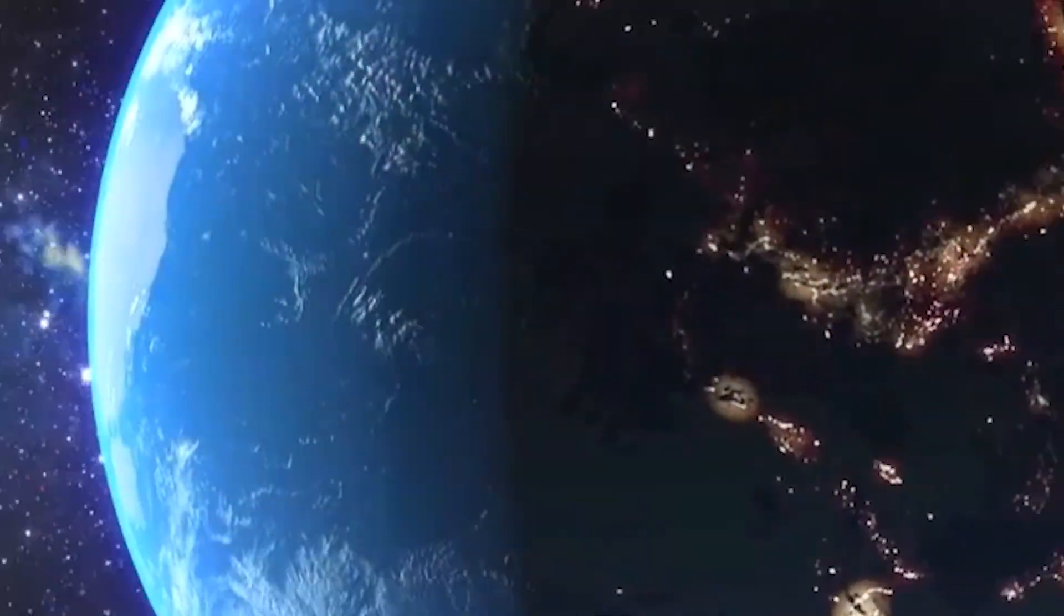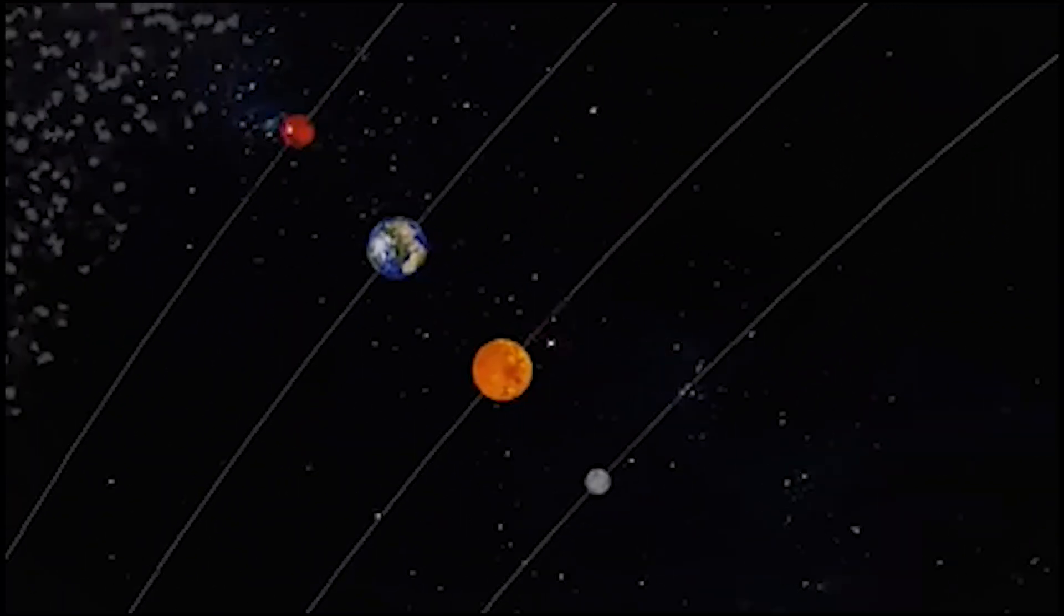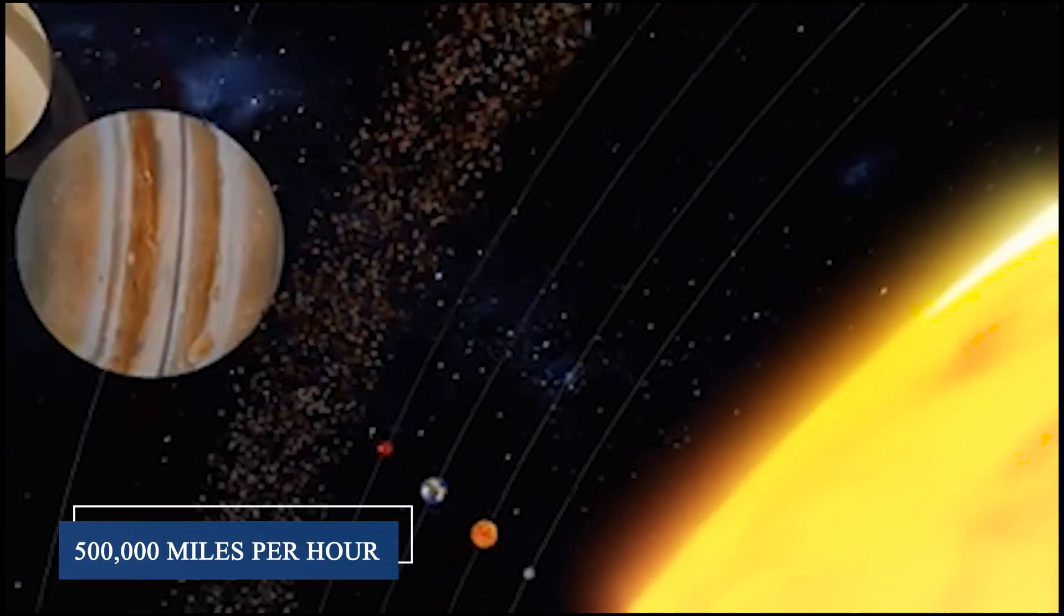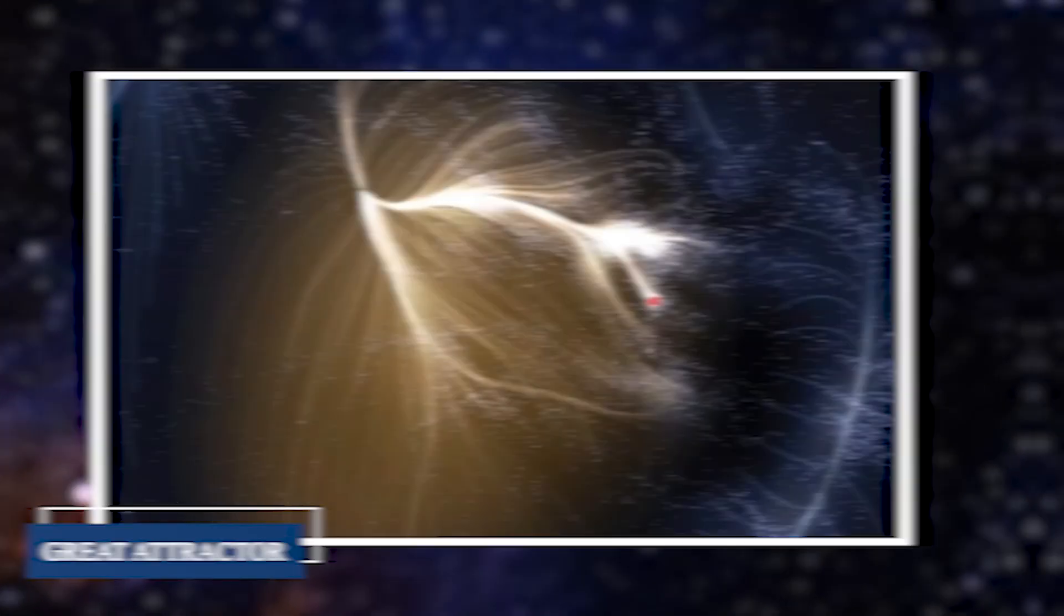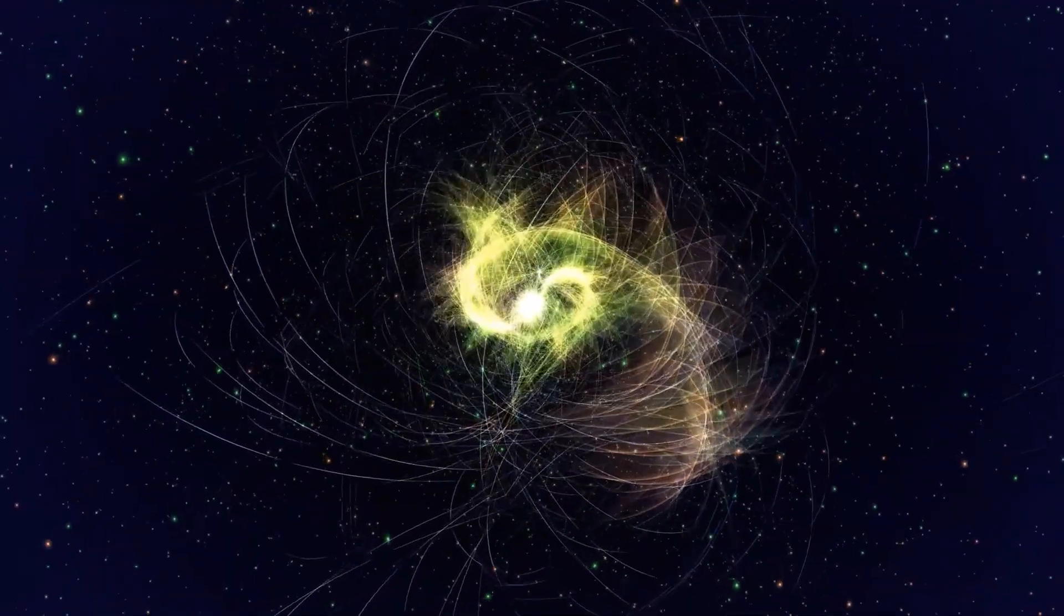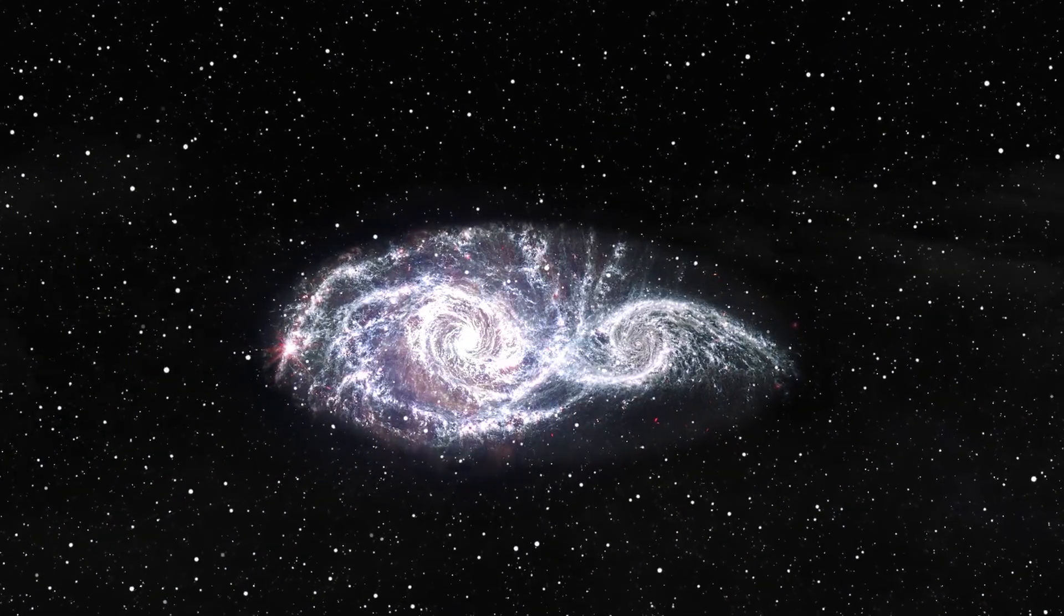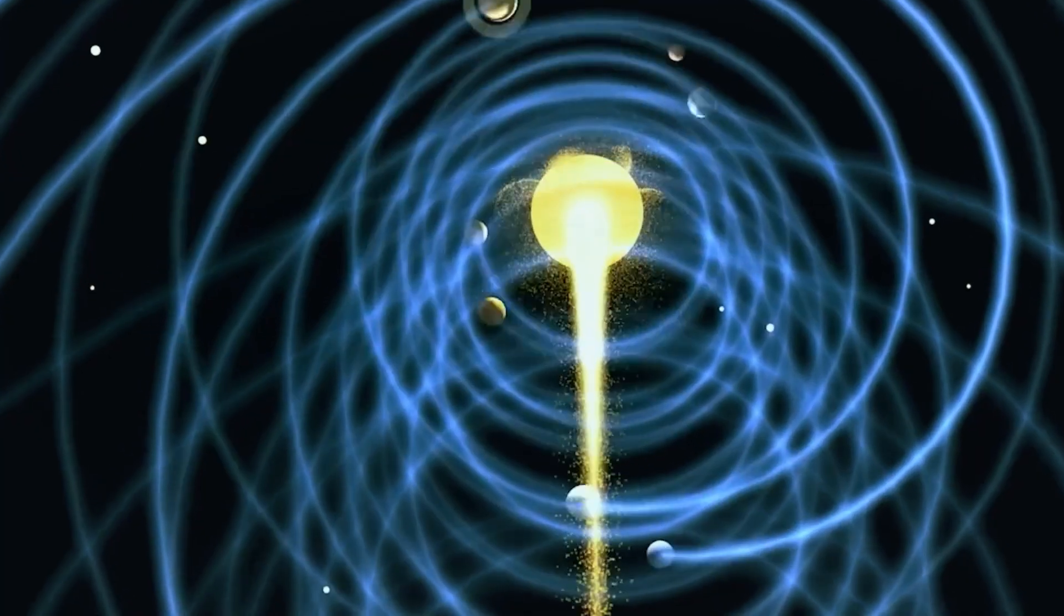Right now, as you're watching this video, our entire solar system is racing through space at over 500,000 miles per hour towards something called the Great Attractor. A gravitational, dense region of the cosmic web, so massive it's pulling entire galaxy clusters toward it. But that's just the beginning.